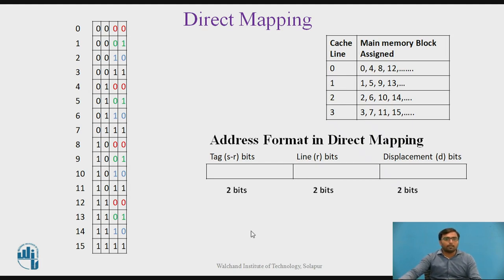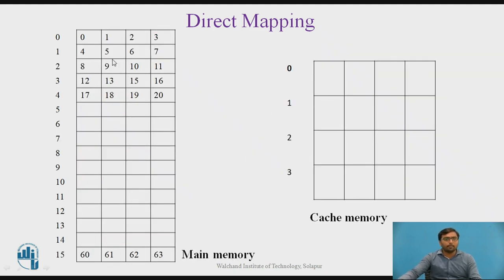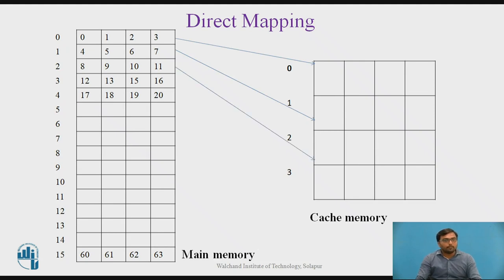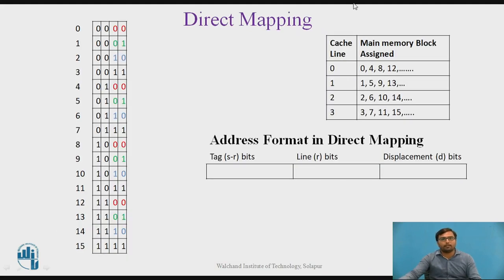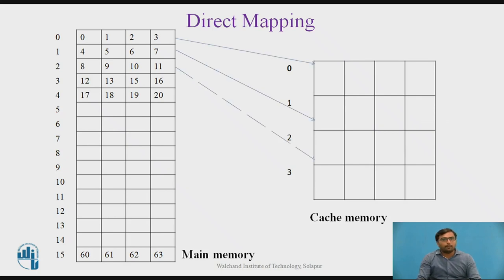So the address format for this example is: 2 bits for the tag, 2 bits for the line, and 2 bits for the displacement. In the diagram, the memory size goes from 0 to 15 blocks, with each block containing 4 memory words, covering words 0 to 63. Block 0 maps to cache line 0, the next block maps to the next line, and so on in round-robin fashion, with blocks 0, 4, 8, and 12 all mapping to cache line 0.